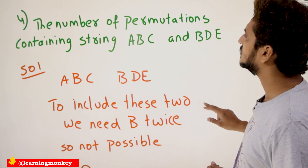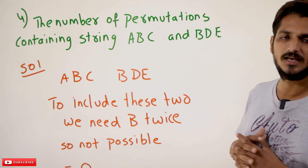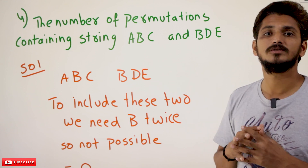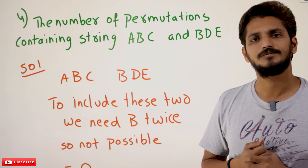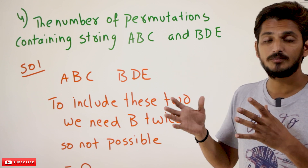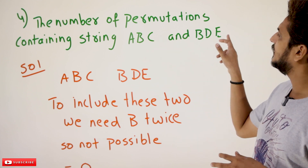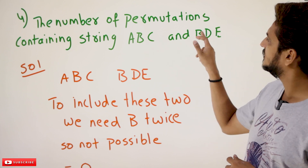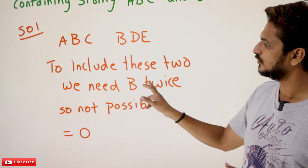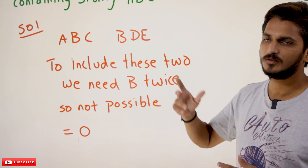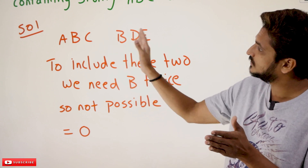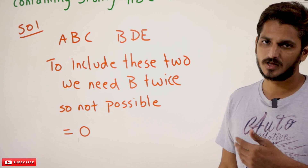Similarly, the next example: the number of permutations containing string A, B, C and B, D, E. If you take A, B, C as one element and B, D, E as another element, B would need to be placed in 2 different places. But from the given input we have only one B, and repetition is not allowed — all these examples are based on without repetition. Can you form any combination like A, B, C, B, D, E? No — B would need to appear two times, which is not possible. So the number of arrangements is 0.